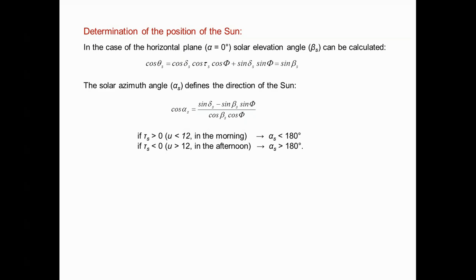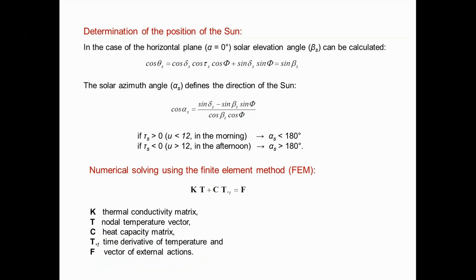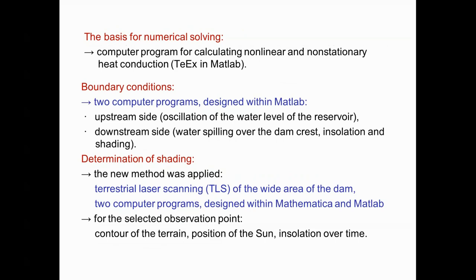To determine the position of the sun, it is necessary to calculate the solar azimuth angle. Taking into account the corresponding boundary conditions, the Fourier equation can be solved numerically using the finite element method, yielding a system of differential equations that includes the thermal conductivity matrix, nodal temperature vector, heat capacity matrix, time derivative of temperature, and vector of external actions. The basis for numerical solving was the TX program in MATLAB, upgraded with programs for time-varying boundary conditions on the upstream and downstream side, oscillation of the water level, spillover, insulation, and shading.